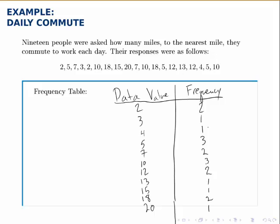And it's really as simple as that. Once we've filled in the frequency table, a quick check that we can do is add up all the frequencies, and they should add up to how many data points we have. And here if we add up these frequencies, we do find a total of 19.